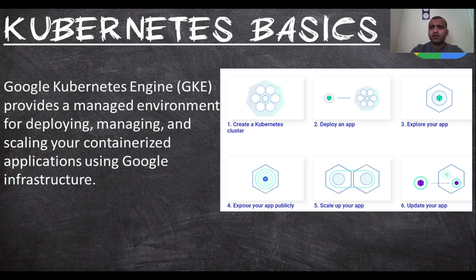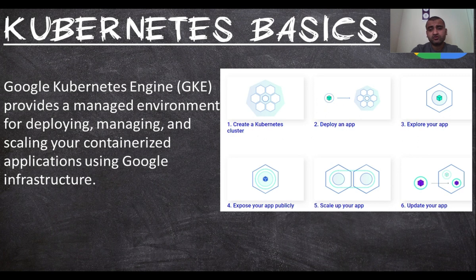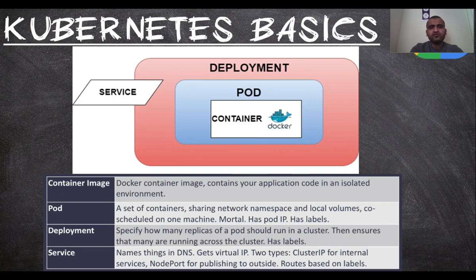GKE creates a Kubernetes cluster — a set of machines — onto which the containerized application gets deployed. Kubernetes then exposes the app to the outside world. You can also scale your application: if today your application is used by five users but suddenly demand rises to 500,000 users, Kubernetes can auto-scale without manual intervention. Also, rolling updates and frequent updates to your application can be done seamlessly when the Kubernetes engine is managing your containers.